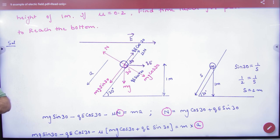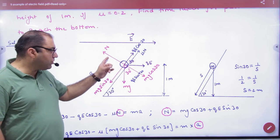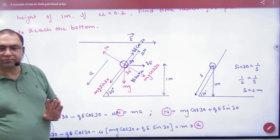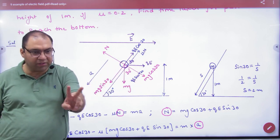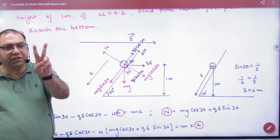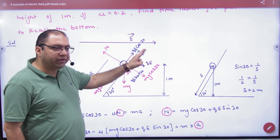One force will be weight. That is mg. mg cos and mg sin. So this was in plus 1. The other force will be friction. Friction force is mu times normal reaction.